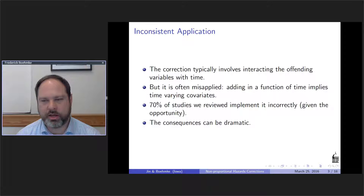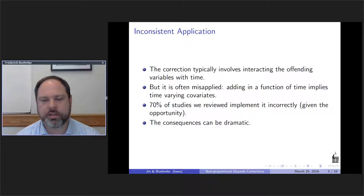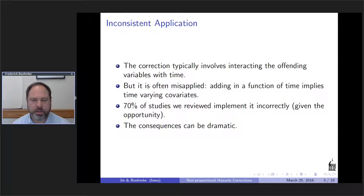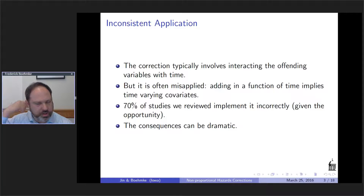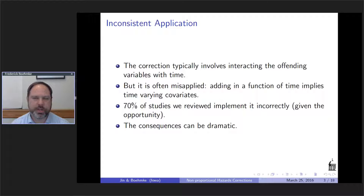As we note, this is often misapplied. The reason is a conceptual change in the structure of your data. If you go from having data where none of the covariates changes over time — time-invariant covariates — to interacting one of them with time, you've now created a situation where you have a covariate that changes with time, since time itself is certainly a time-varying covariate. In some applications, scholars have not made that change to their dataset, and while attempting to correct one problem, they've sort of created another problem in the correction.